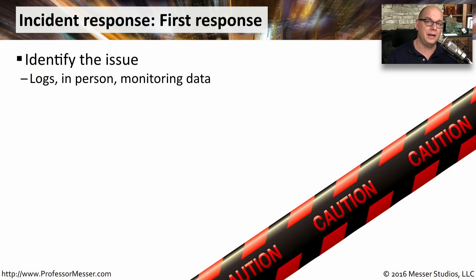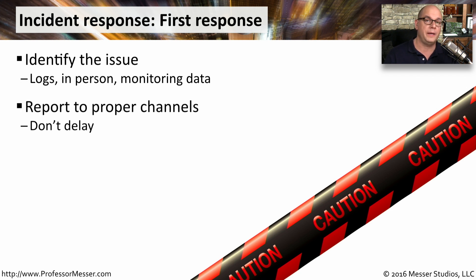On any network, there will be times when inappropriate activity needs to be handled. The first thing you'll need to do is identify that a particular prohibited activity is occurring. You can look through logs and monitoring data for this information, or sometimes you may see this happening yourself. Your first step should be to report everything that's seen and identified to the proper channels. There's probably a notification list for these types of events in your organization.